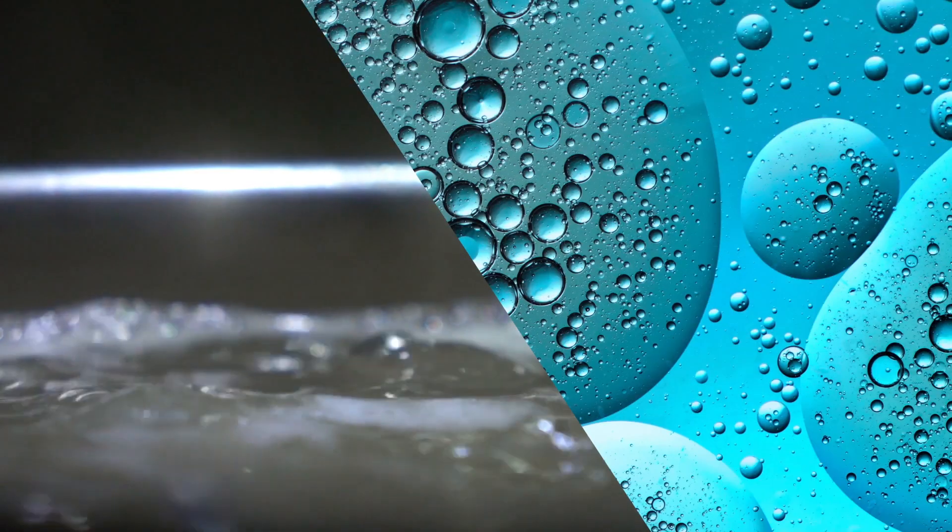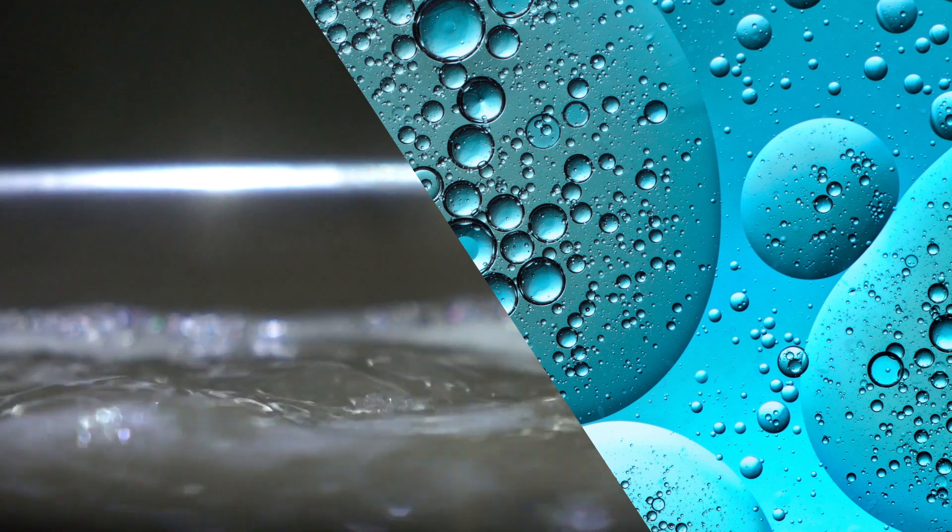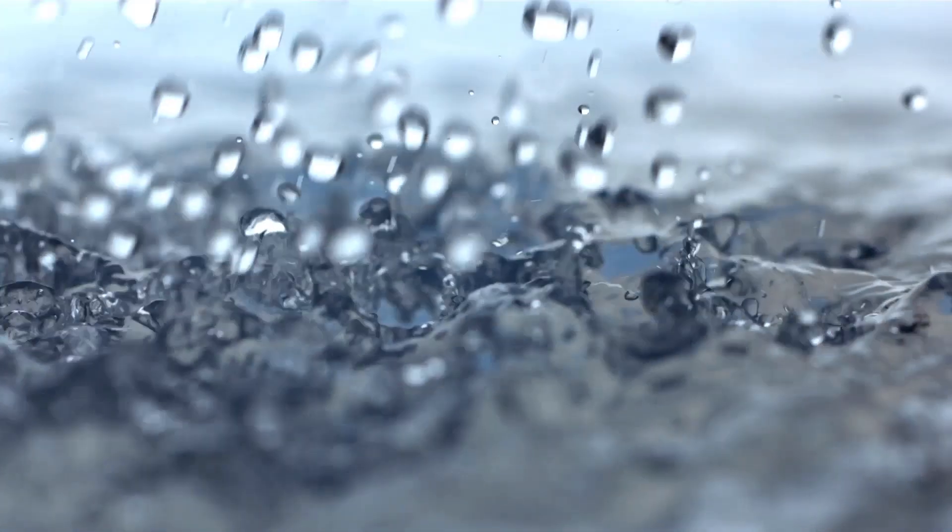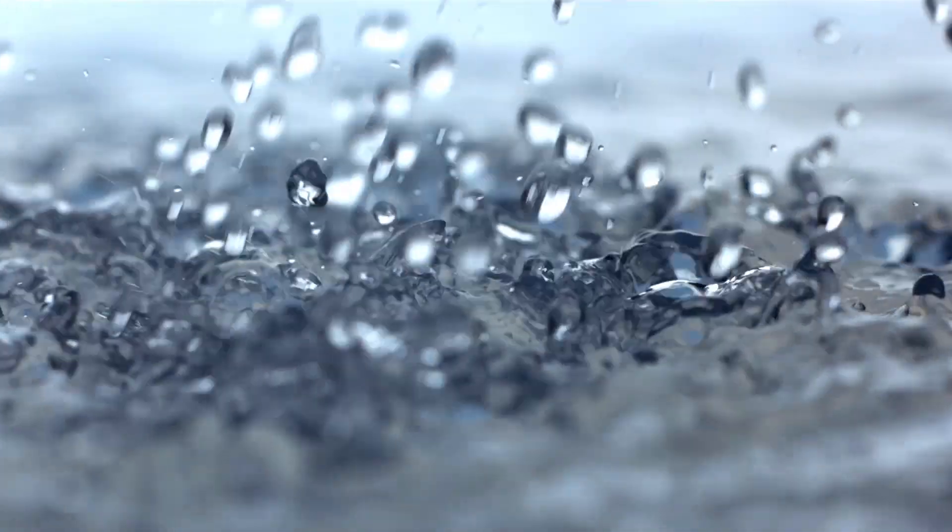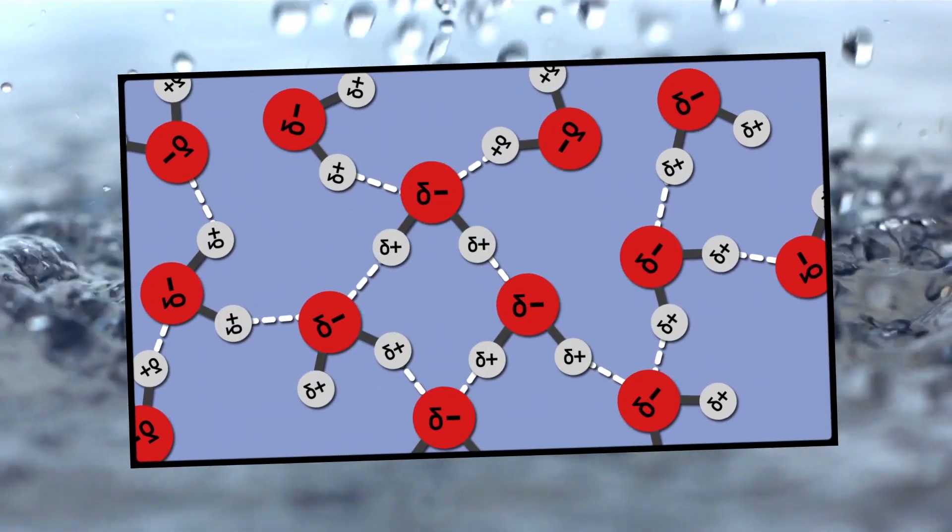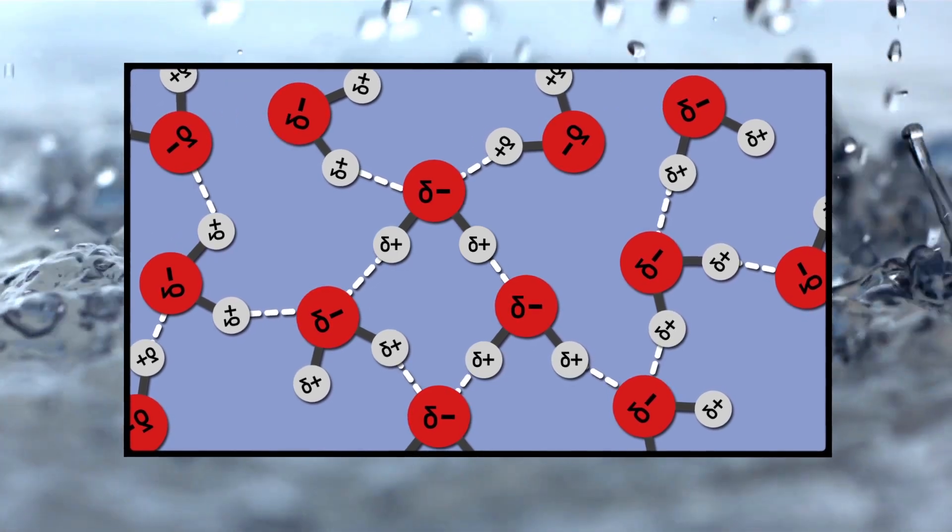So, water's high boiling point and the way it interacts with different substances comes down to the polar nature of water molecules. Water's properties are all great examples of what we observe on the macroscopic level being influenced by what goes on at the molecular level and how we link the properties of chemical substances to those structures.